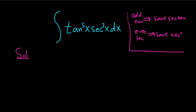In this case, the power of secant is odd, so this doesn't work. We have an odd tangent, so we can try to save a copy of secant tangent.